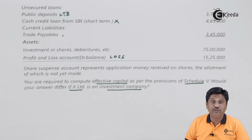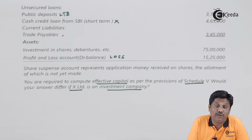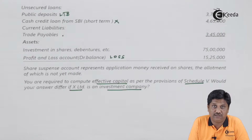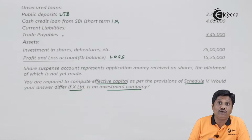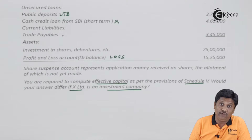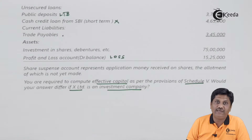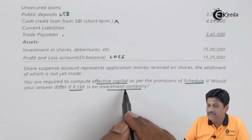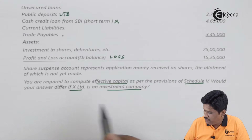Effective capital is relevant when you are having no profit or your profits are insufficient. On the basis of effective capital you decide how much maximum remuneration you can pay to your directors. So here we are going to calculate the effective capital based on which managerial remuneration can be given. Let us work out what your effective capital will be.